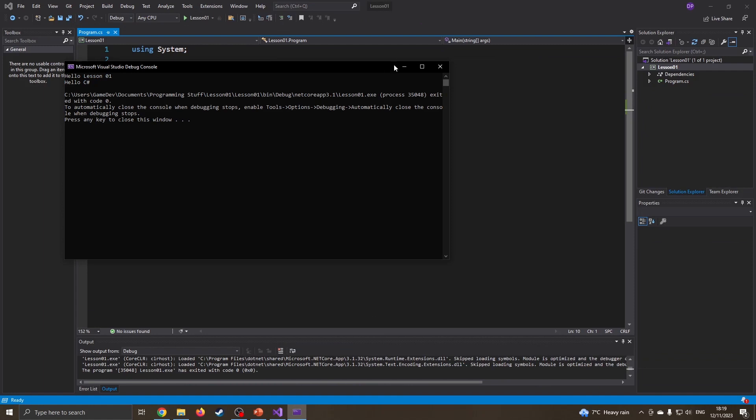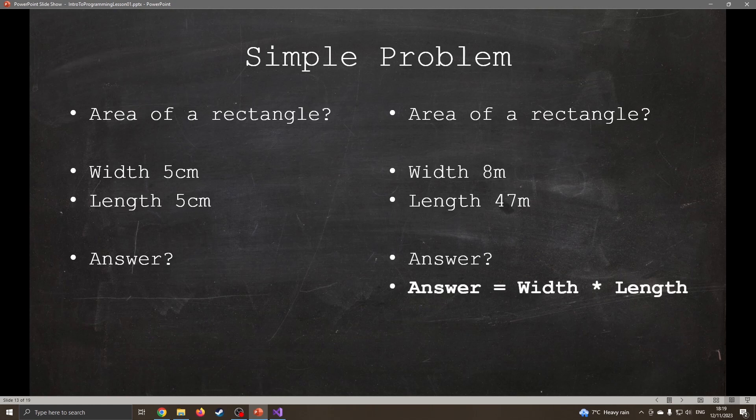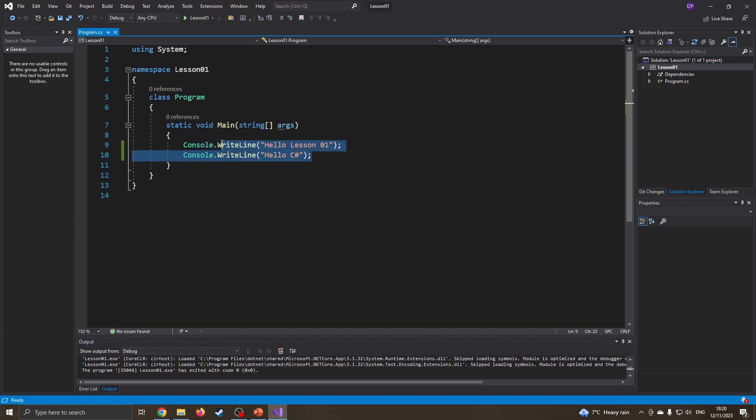Okay, so we're gonna do something a little more interesting now. Think of a simple problem: area of a rectangle. You know, the width is five centimeters, length is five centimeters. I'm sure many of you know immediately, the answer is five times five equals 25. A rectangle, 8 by 47, all we're doing is multiplying the width by the length. So this becomes our program, this is our algorithm: the answer is equal to the width times the length. We don't have to worry too much about the number itself. So if we want to code this, I could just get rid of these for the moment. I could output enter first number, and I'm sure I'm going to be lazy. I'm gonna copy and paste that.